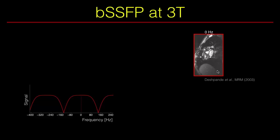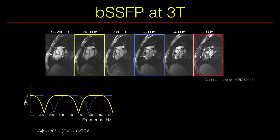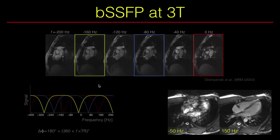Balanced SSFP imaging becomes more complicated at 3 Tesla because field inhomogeneity increases at higher field strength. By shifting the frequency — adjusting the RF phase increment — we can shift the frequency response curve, for example to about minus 80 Hz or minus 160 Hz, moving the bands outside the region of interest. Images show that by shifting these frequency bands outside the region of interest we can get very good balanced SSFP images at 3 Tesla.